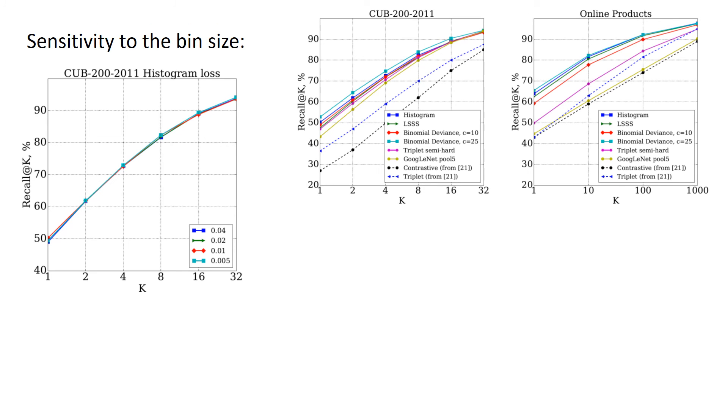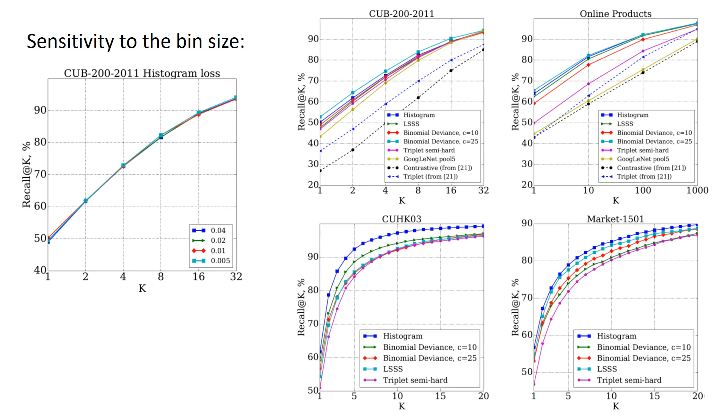We perform extensive experiments and compare the quality of the embeddings learned using different loss functions. In some comparisons, our loss shown in blue is on par or slightly worse than the best of the previous losses with carefully tuned parameters. In other comparisons, the embeddings trained with our loss are better.